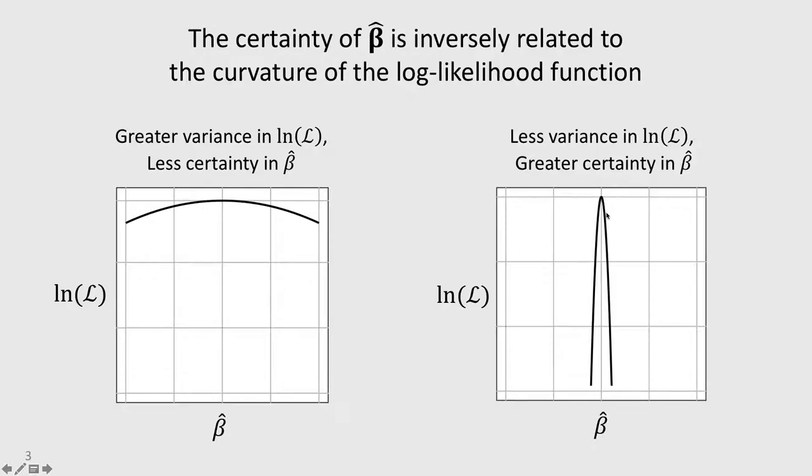Over on the right plot, that's not the case. As soon as you move away from this line here where the best estimate of beta is, well, you very quickly reduce the likelihood. And so the difference here is on the left,